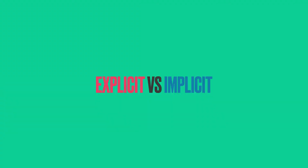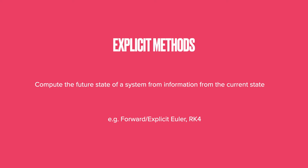Let us shortly review what we mean by explicit and implicit methods. In an explicit method, we compute the future state of a system from information from the current state. Explicit methods are always conditionally stable. We saw that when using the central difference method, the time step size must be smaller than a certain value that is completely governed by the smallest time period of the system. Moreover, a finite element discretization of a structure generates spurious high-frequency oscillations that are not relevant for the overall behavior of the structure.